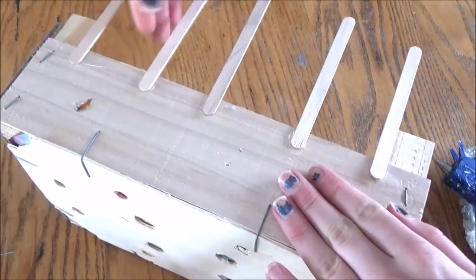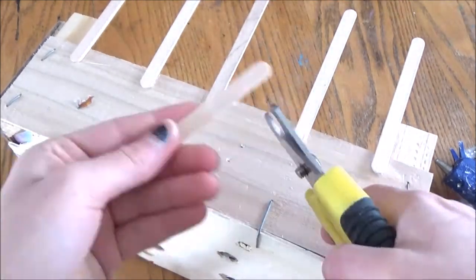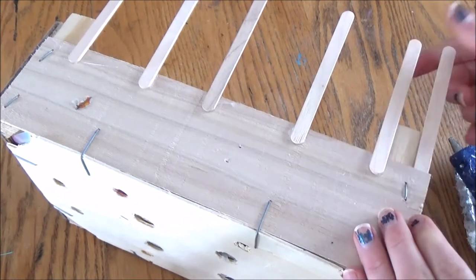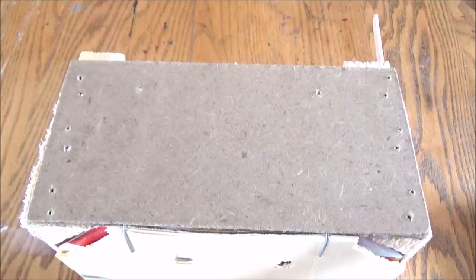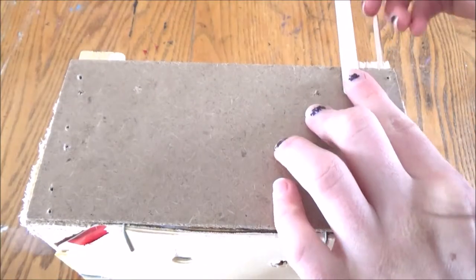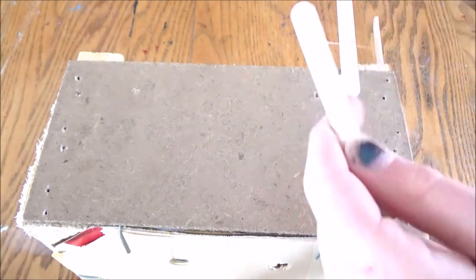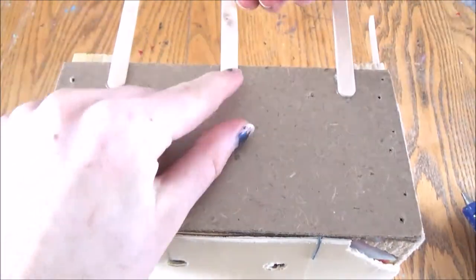So I did that for both sides and then I cut a smaller, I cut the popsicle stick to be a bit smaller to glue at the front. And then I did the same thing at the back only this time obviously they were closer together because they used the same amount of popsicle sticks.